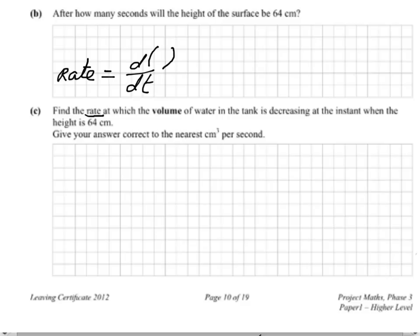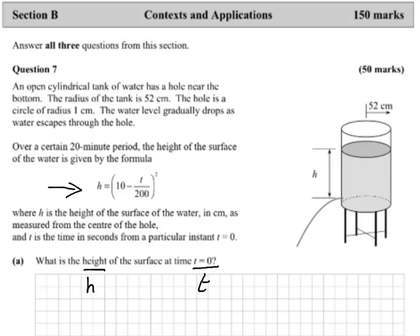What are we differentiating? The examiner gives us a strong hint — he has the word 'volume' in bold. So we're getting the rate of change of volume, meaning the missing quantity is V. Notice we've simply changed an English sentence into a maths statement: the rate is dV/dt. But we can't differentiate volume until we actually have an equation for volume first, so we need to go back to the question.